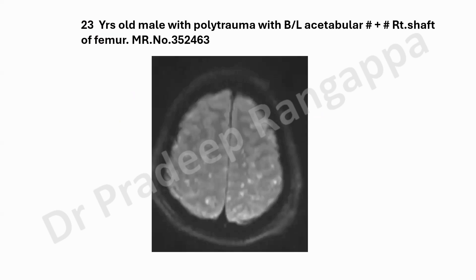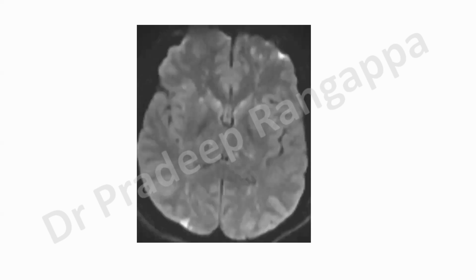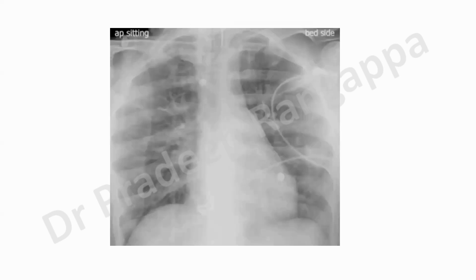This is a 23-year-old male referred from another hospital with polytrauma — bilateral acetabular fracture with right shaft of femur. He was in the ward awaiting fracture fixation the next day when he developed shortness of breath and obtundation. MRI and chest X-rays showed multiple microinfarcts along with alveolar-based opacities and ground-glassing, all suggestive of possible fat embolism given the clinical context.